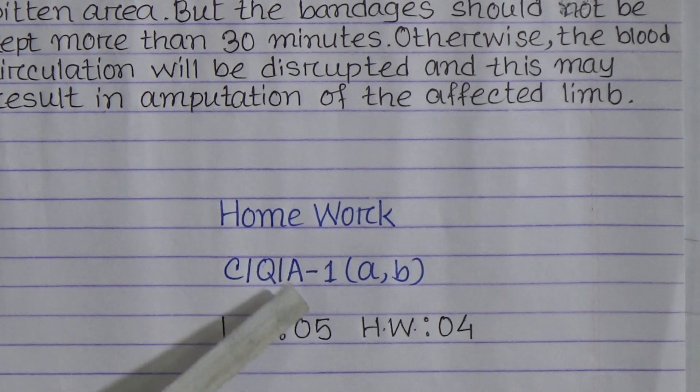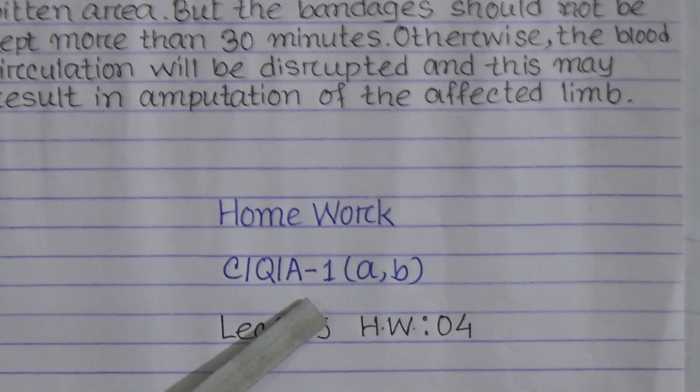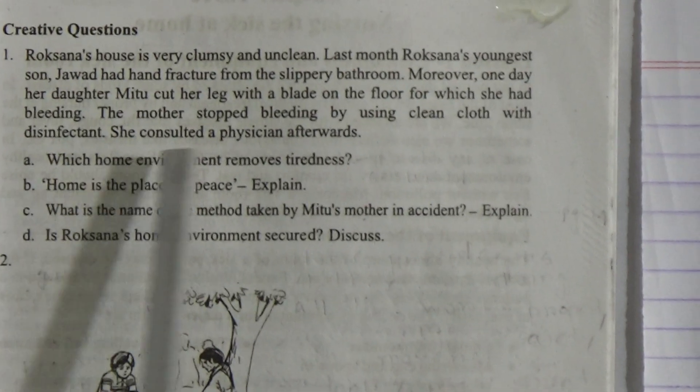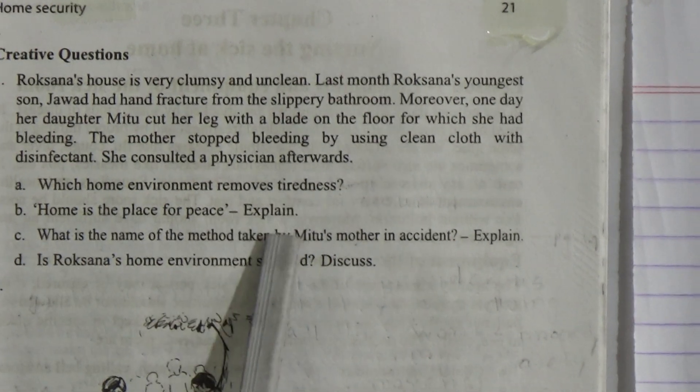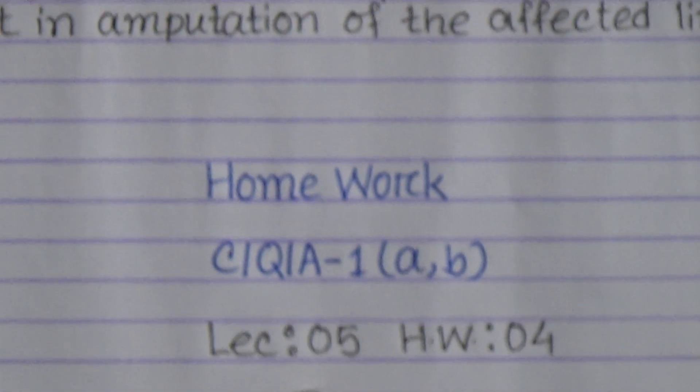That's all for creative question answer one and two. Your homework will be creative question answer A and B from question one: which home environment removes tiredness, and home is the place for peace — explain. Don't forget to write the lecture number and homework number with the submission date at the top of your copy. Lecture number is five and homework number is four. Submit your homework copies every Saturday. Keep practicing at home, abide by your parents, stay well, and see you again. Allah Hafiz, Assalamu Alaikum.